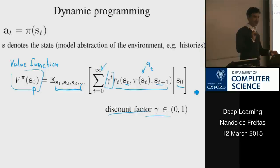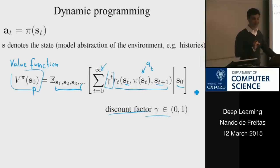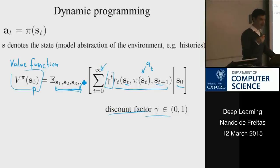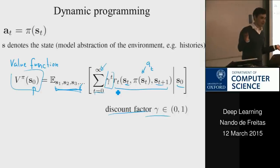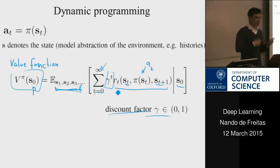This is the key equation. Everything we're going to do next will be techniques for solving this equation. We have an intractable expectation and sums going to infinity — this looks like a very hard thing to compute. Dynamic programming will be a strategy for computing it. Are there any questions about the setup?